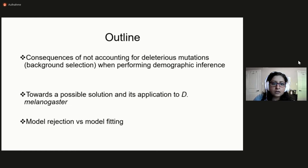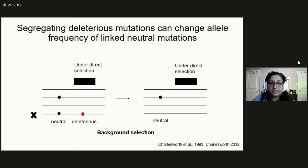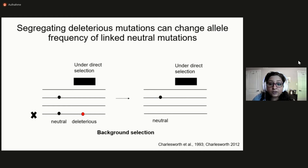When mutations are strongly deleterious, they simply decrease the general level of overall diversity at nearby sites. However, when the strength of selection against deleterious mutations is small, they can segregate in populations for a while before they are purged, and thus they end up changing the allele frequency of nearby neutral mutations. Background selection results in an increase in the proportion of rare alleles at these linked neutral sites, meaning deleterious mutations can skew the expected distribution of allele frequencies from neutrality.